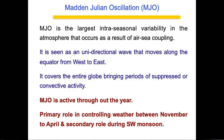It is the largest intraseasonal variability because it covers the entire globe, thereby bringing periods of suppressed or enhanced convective activity — meaning rainfall activity is either large or low. MJO is active throughout the year. However, the primary role of MJO is in controlling weather between November and April. During the southwest monsoon season, MJO plays a secondary role because something known as MISO — the Monsoon Intraseasonal Oscillation — takes over as the primary driver.